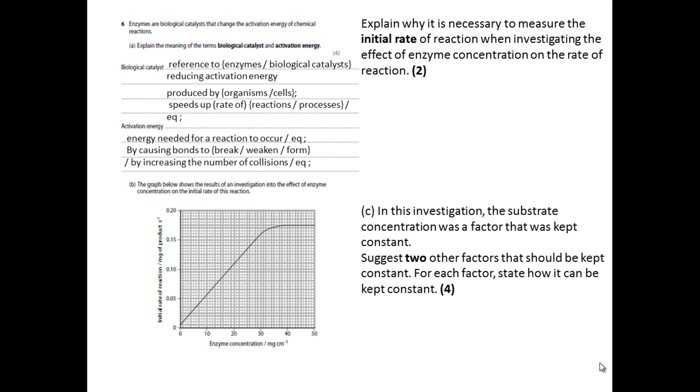The activation energy is the energy required for a reaction to occur and what it does is it basically breaks or weakens bonds by increasing the number of collisions and therefore that is what enzymes effectively do. They lower the activation energy and hence quicken the rate.